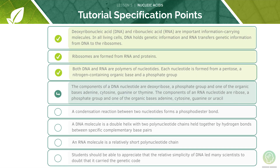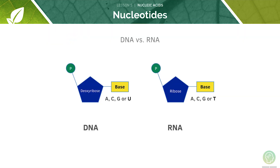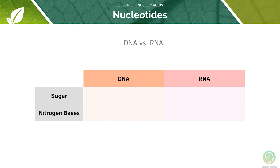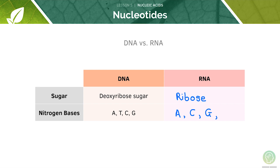Next we will look at the components of DNA and RNA. It's useful to visualize how the structures of DNA and RNA differ — let's fill in this table together. The sugar in DNA is a deoxyribose sugar and the bases found in DNA are A, T, C, and G. RNA contains a ribose sugar and the bases found in RNA are A, C, G, and U.